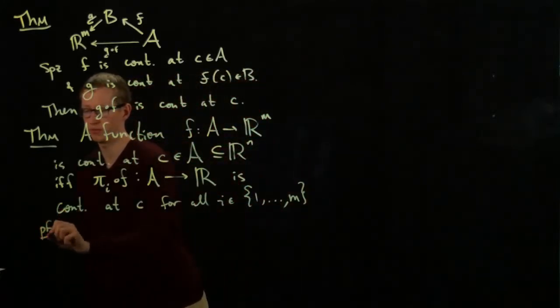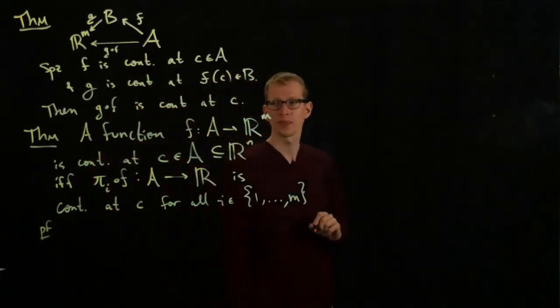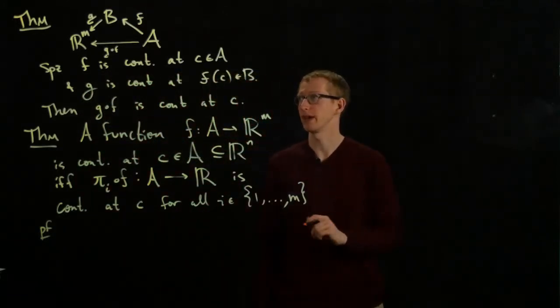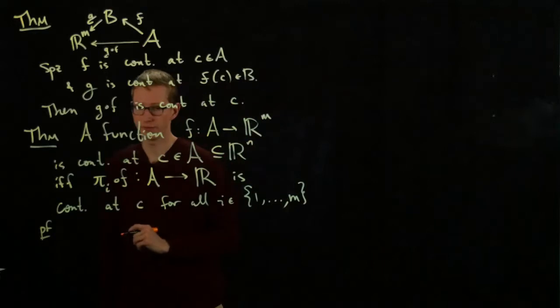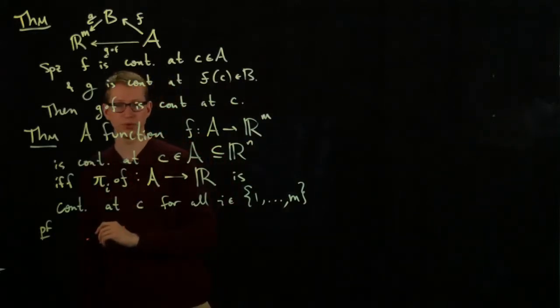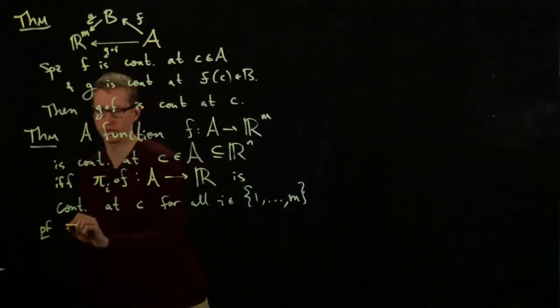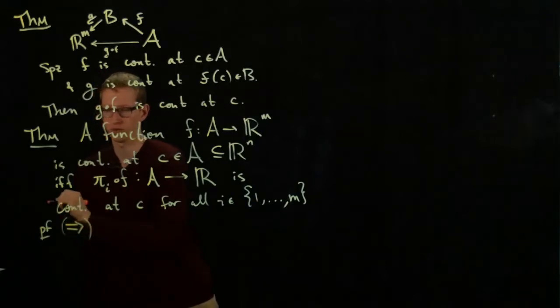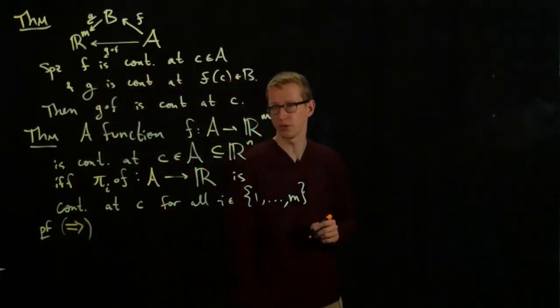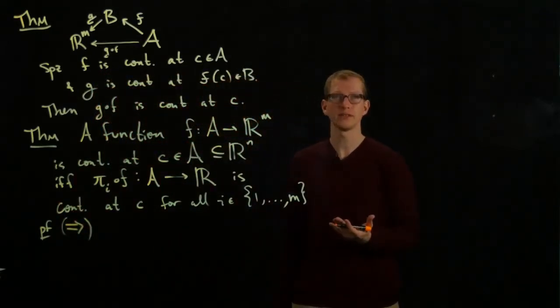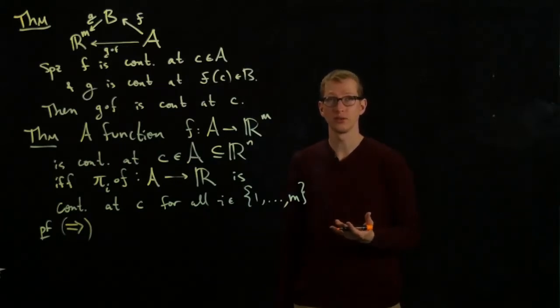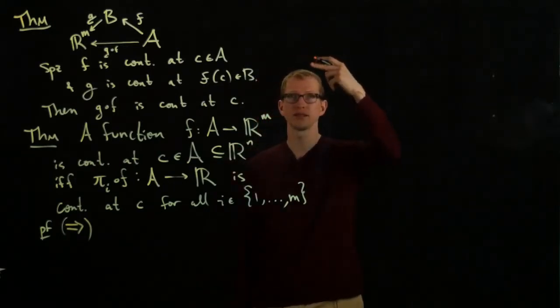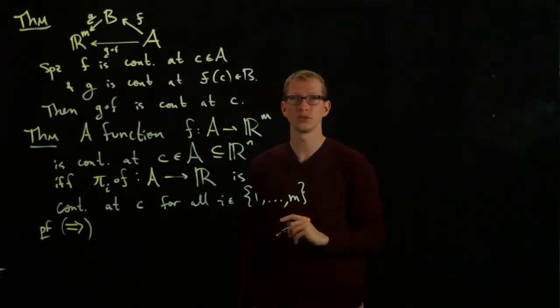And we'll actually prove this theorem. The proof is rather simple, but it relies on a couple of important facts. So first, let's prove it in one direction. As with any if and only if proof, we usually prove this in some direction. So let's suppose that F is continuous. When F is continuous, this previous theorem tells us that if we compose with any other continuous function at the appropriate value, we'll end up with a continuous function as well.